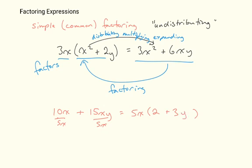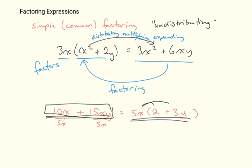And I could always check my answer. I could go back and redistribute the 5x into the 2 and the 3y. And if I end up with the same expression that I started with, well, then I've done it correctly. So here we have the factored form of this expression. Here we have the multiplied out form or the simplified form of the same expression.